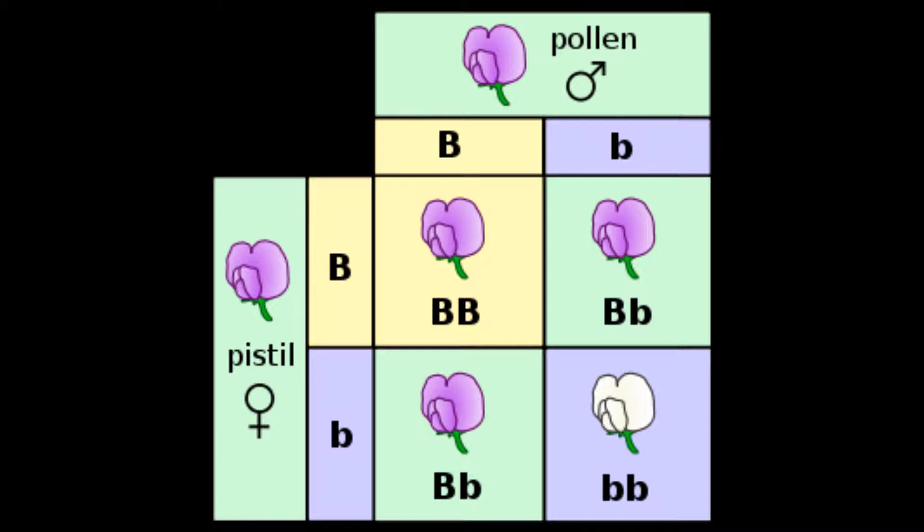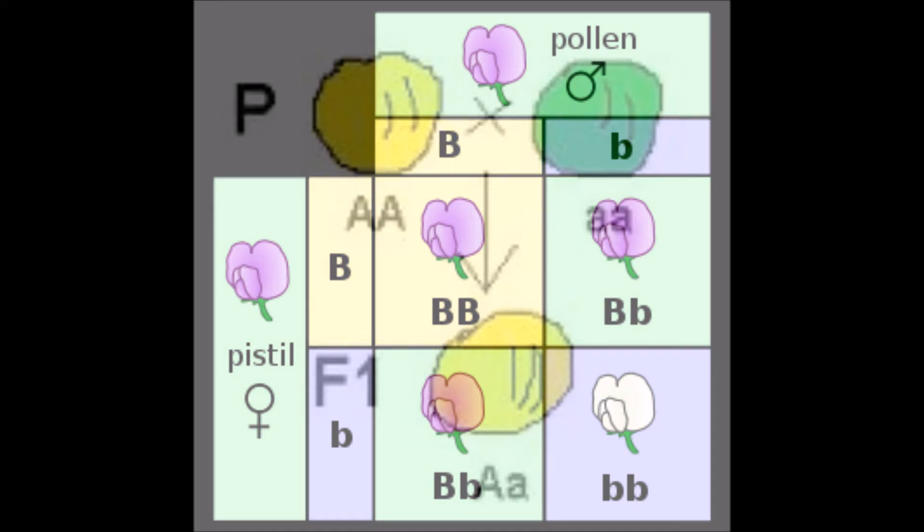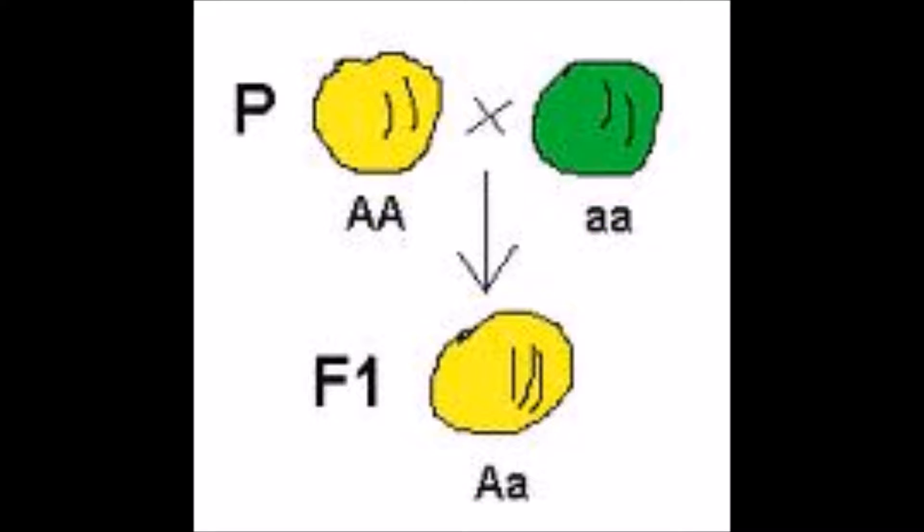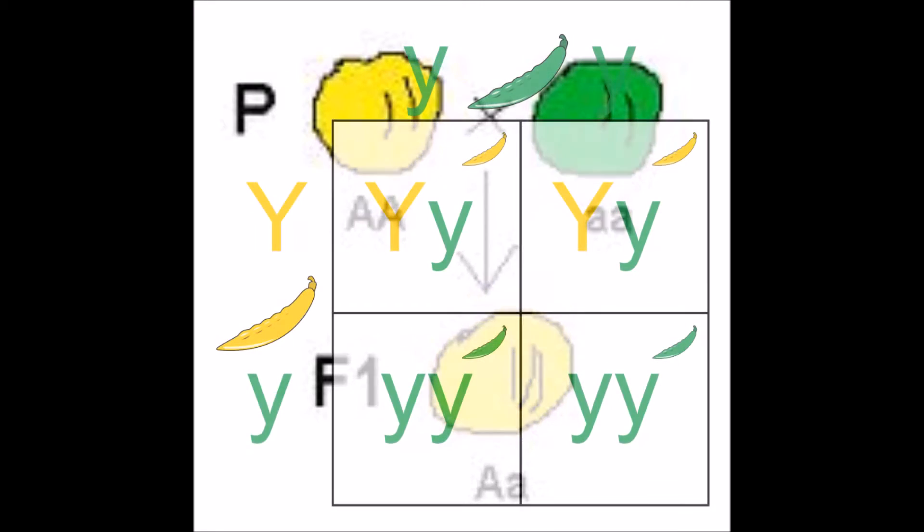But what, you ask, does this lowly pea have to do with you and me? Well, Mendel wondered if every trait comes to peas and children straight from one parent to the other, which is why both you and I look just like our father and mother.